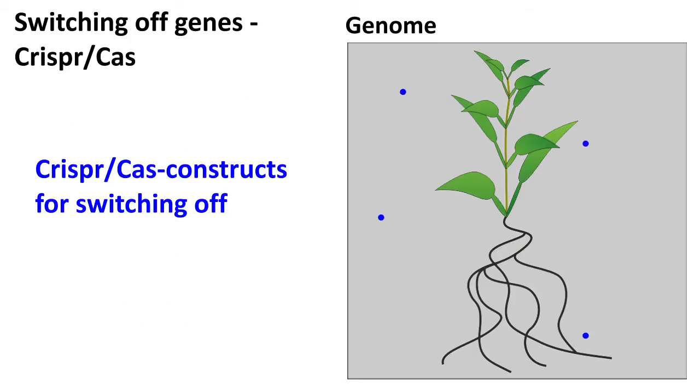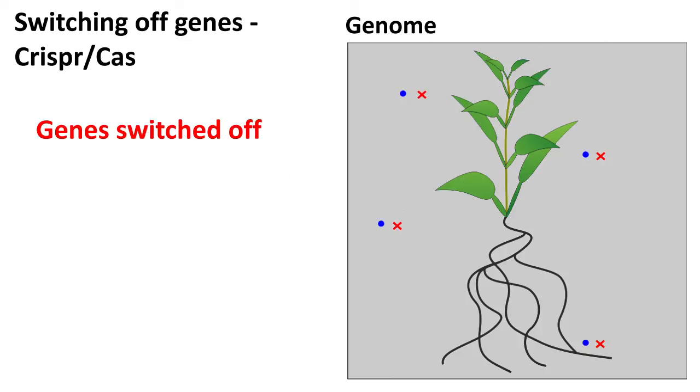CRISPR-Cas also uses suppressor constructs to switch off specific genes. These constructs, however, are inserted into plant genomes only temporarily. They are removing the genes to be switched off from the genome. Subsequently, they are removed themselves by means of conventional breeding.